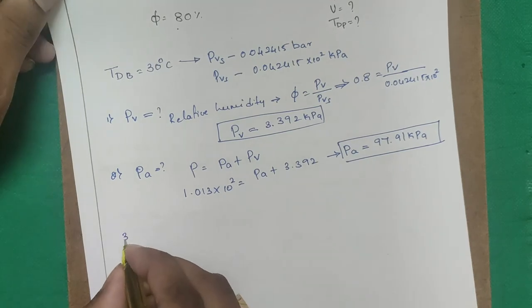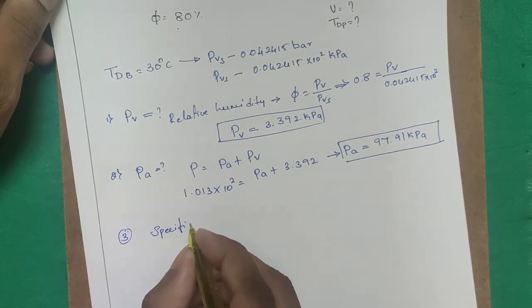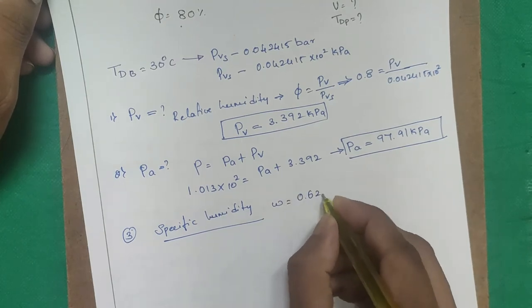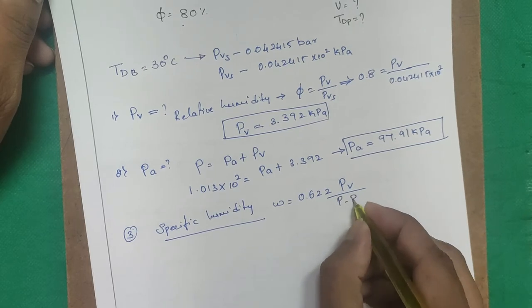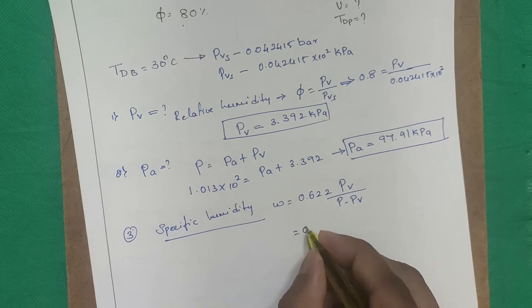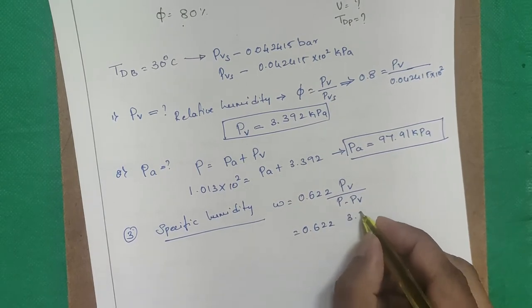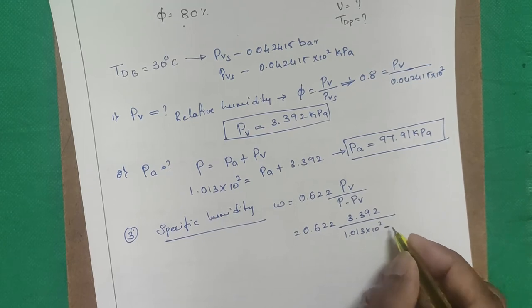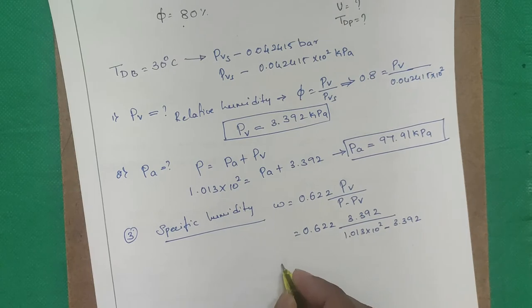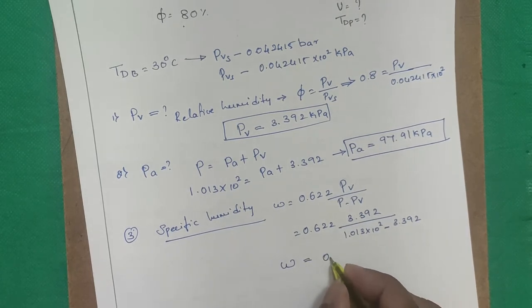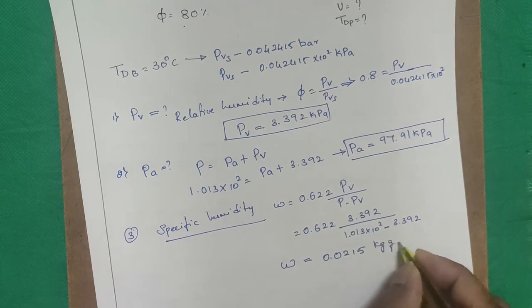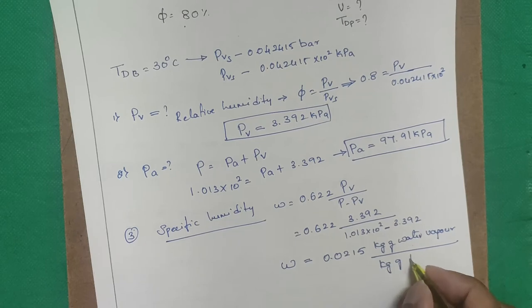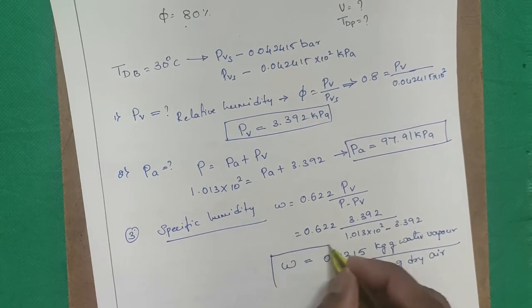Step 3 — Specific humidity: W = 0.622 × PV / (P − PV) = 0.622 × 3.392 / (101.3 − 3.392) = 0.0215 kg of water vapor per kg of dry air.